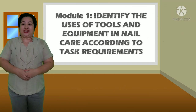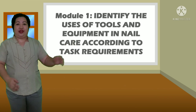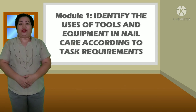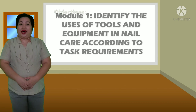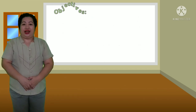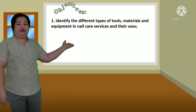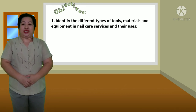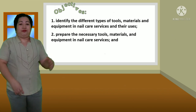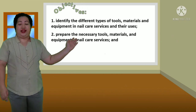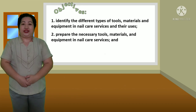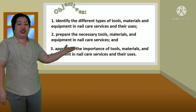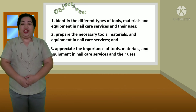Our topic for today is: Identify the Uses of Tools and Equipment in Nail Care According to Task Requirements. Here are the objectives that you will be able to meet at the end of the lesson. Number 1: Identify the different types of tools, materials, and equipment in nail care services and their uses. Number 2: Prepare the necessary tools, materials, and equipment in nail care services. And number 3: Appreciate the importance of tools, materials, and equipment in nail care services and their uses.